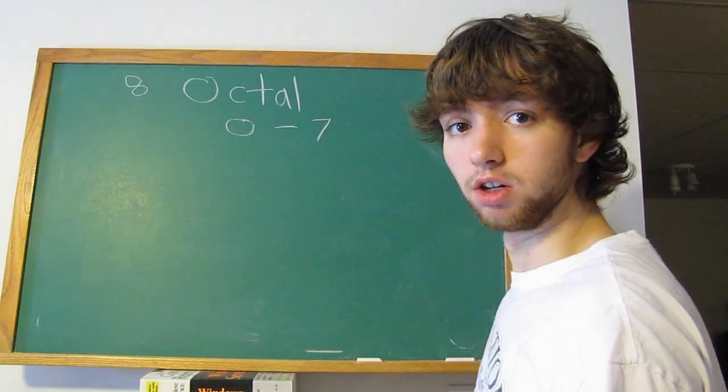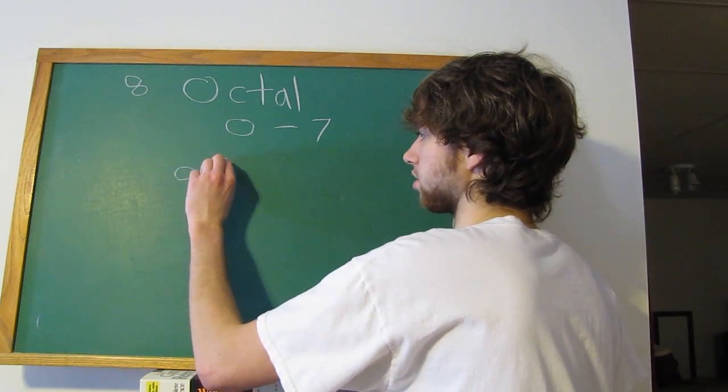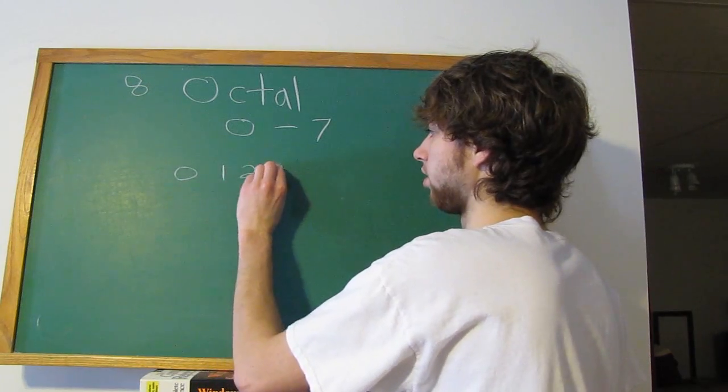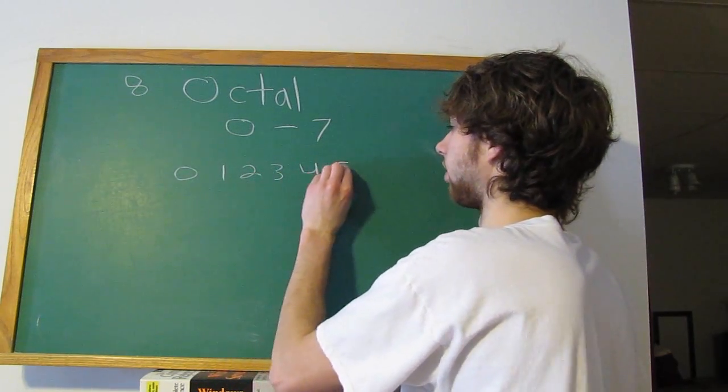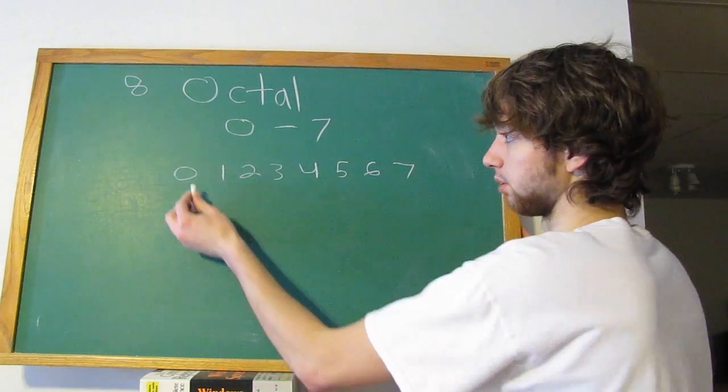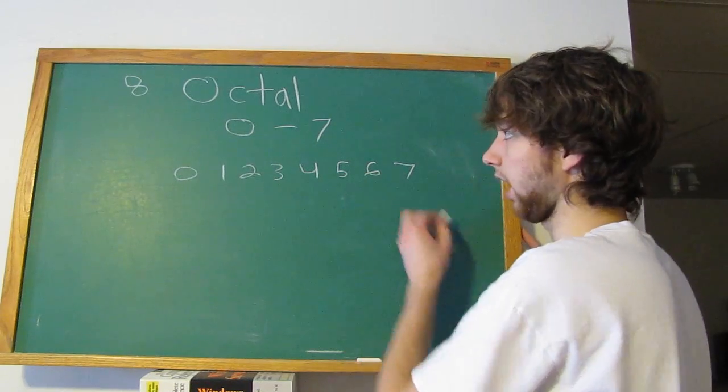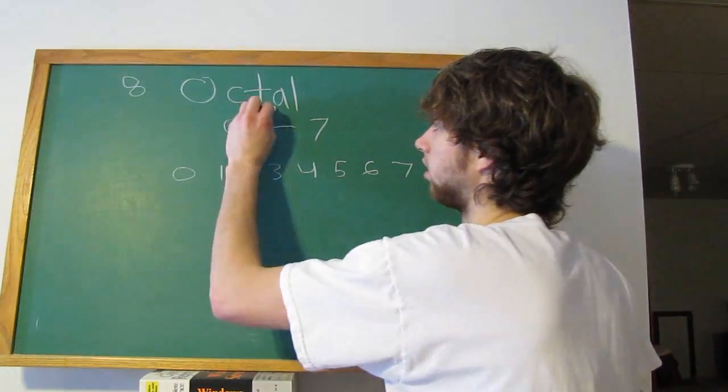So the complete octal dictionary, or numbering system, contains the numbers 0, 1, 2, 3, 4, 5, 6, and 7. And if we were to count these, we would get 1, 2, 3, 4, 5, 6, 7, and 8. Or oct. That's what oct means.